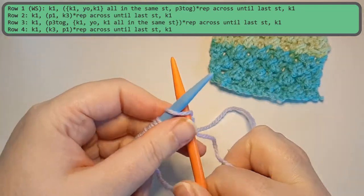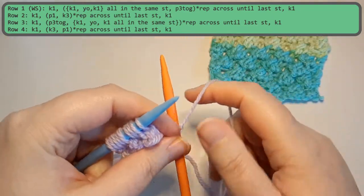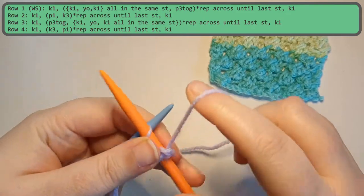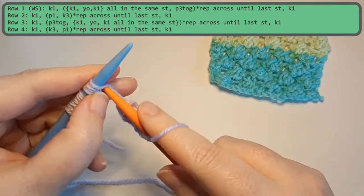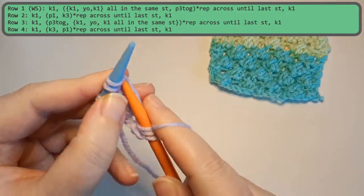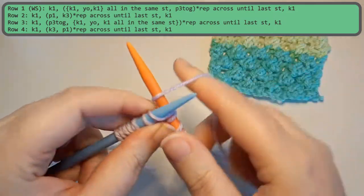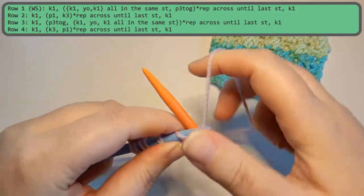So for row two we are going to start off by knitting one. And then our repeat is going to be purl one, knit three. And you'll do that repeat all the way till the end of the row where your last stitch will be a knit.